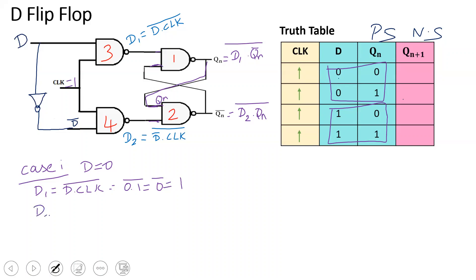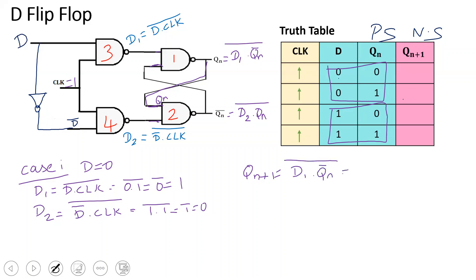Next, D2 equals (D bar · clock) bar. With D=0, D bar is 1, so D2 = (1 · 1) bar = 1 bar = 0. So D1=1 and D2=0. Qn+1 equals (D1 · Qn bar) bar = (1 · Qn bar) bar = Qn double bar = Qn. So the next state Qn+1 equals Qn — you get a specific definite answer.